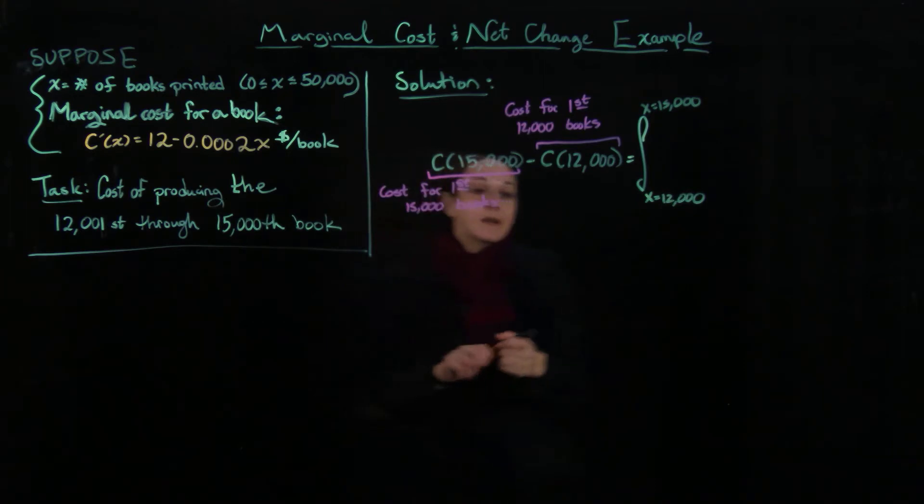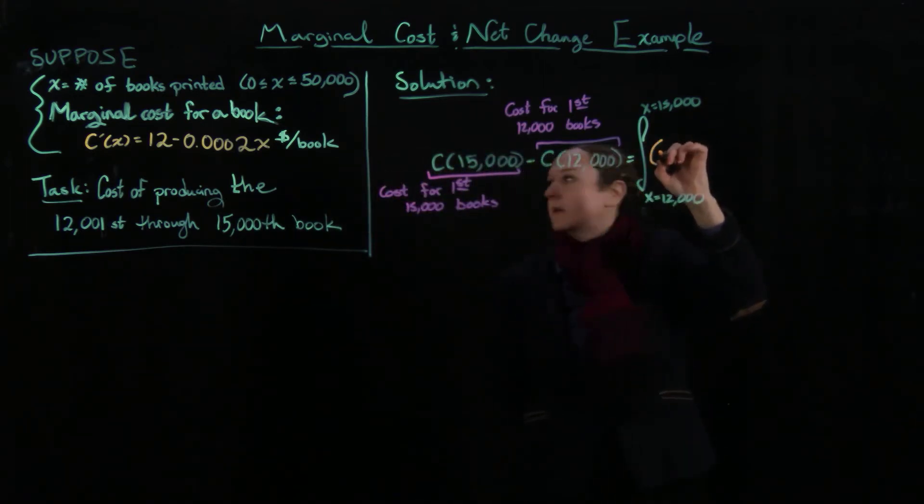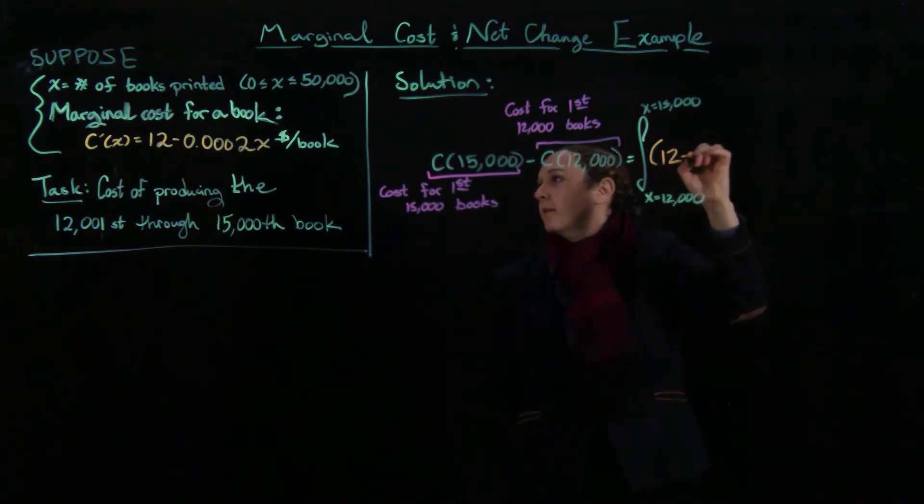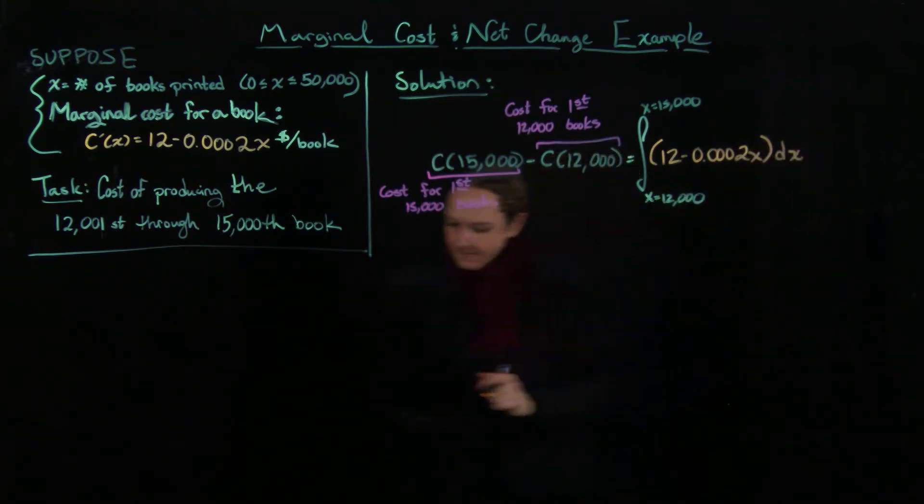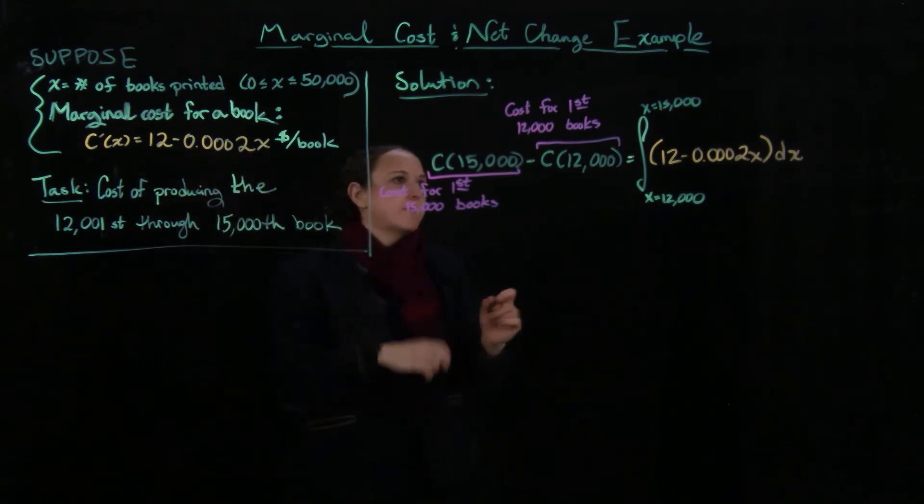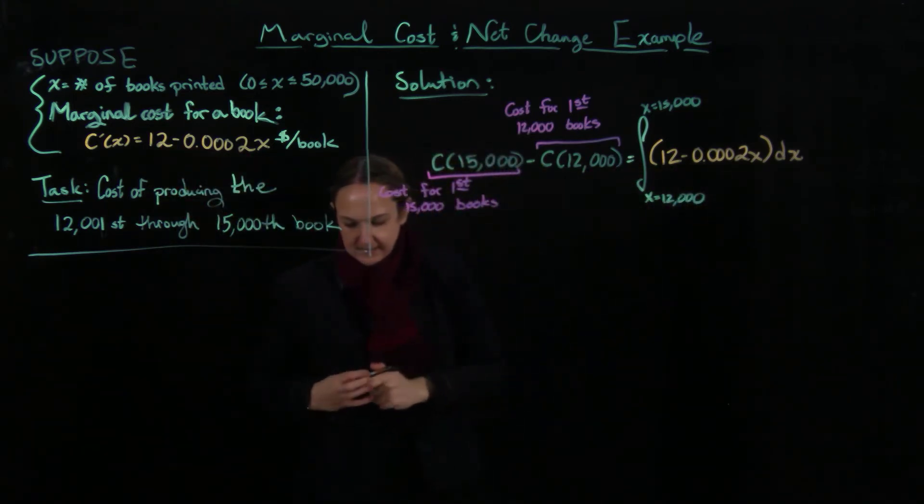So I'm just putting in c prime of x here. So this is going to be 12 minus 0.0002x dx. So that just came from over there because this is my c prime of x, which we know that would be this integral here.